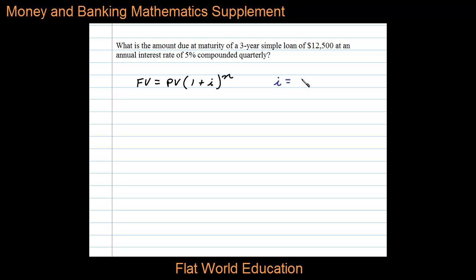In this case, i is equal to 5% divided by 4 because we're compounding quarterly and there's four quarters in a year. That comes out to 1.25% interest per quarter or per period.